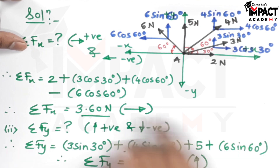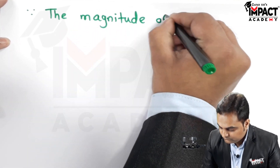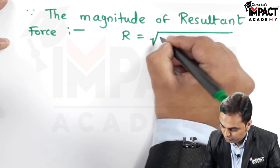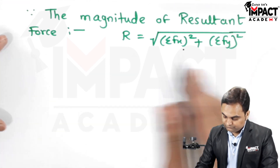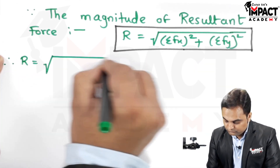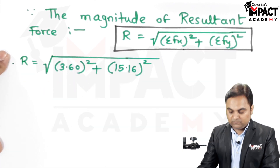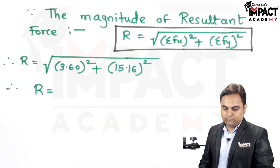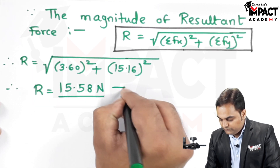After getting summation Fx and summation Fy, we can find the magnitude of the resultant using the formula: R equals the square root of (summation Fx squared plus summation Fy squared). Summation Fx was 3.60 and summation Fy was 15.16. After calculating, the answer comes out to be 15.58 newton. That's the first answer.